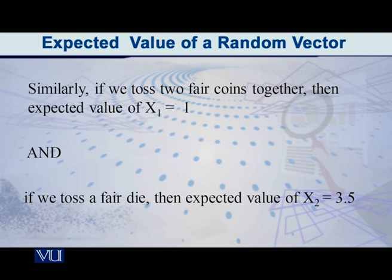So 1, 2, 3, 4, 5, 6, or the middle of 3 and 4, is 3.5. Now I have told you about x1 and its expected value, and x2 and its expected value. This experiment was done separately, that one was done separately.